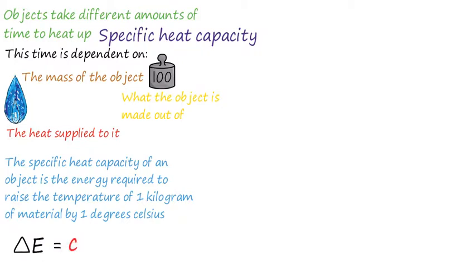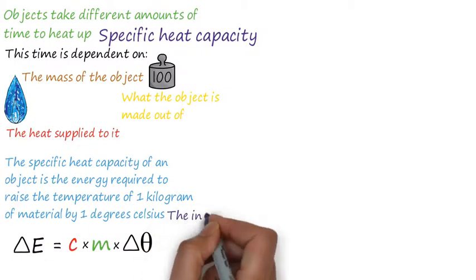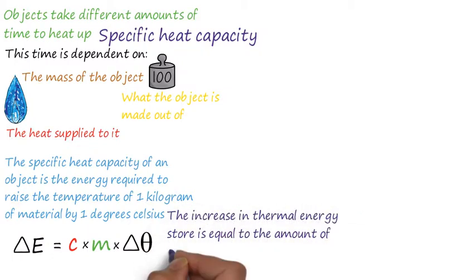Energy transferred measured in joules equals specific heat capacity of the substance measured in joules per kilogram degree Celsius multiplied by the mass of the substance measured in kilograms multiplied by the temperature rise which is measured in degrees Celsius. We can easily rearrange this equation for the specific heat capacity of the object.